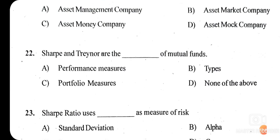Question twenty-two: Sharpe and Treynor are the dash of mutual funds. The right answer is option A — performance measures. Sharpe and Treynor are the performance measures of mutual funds.